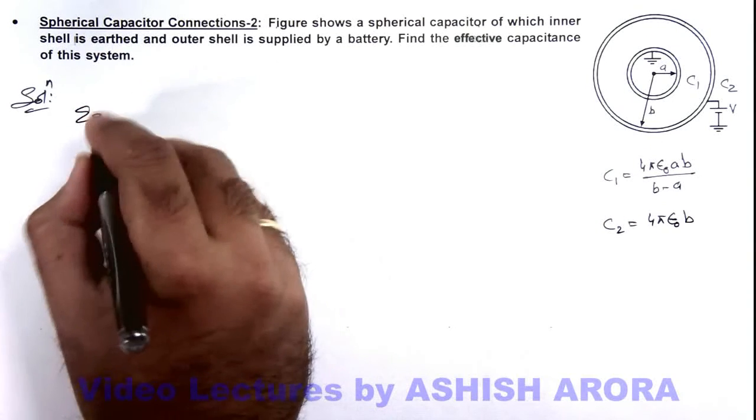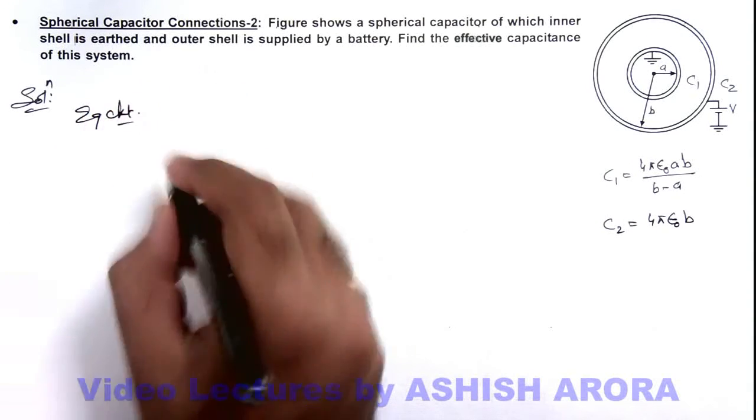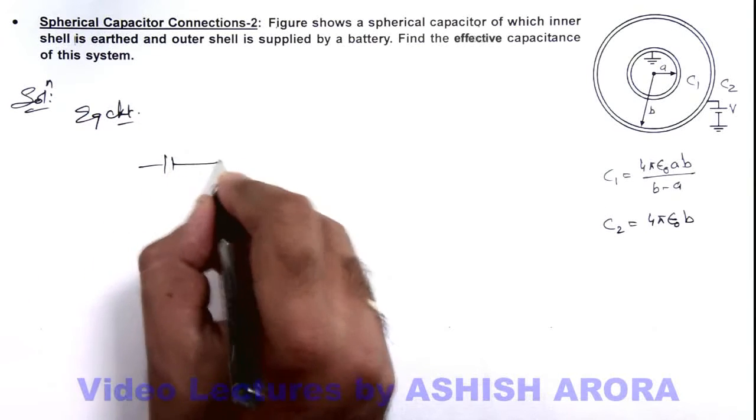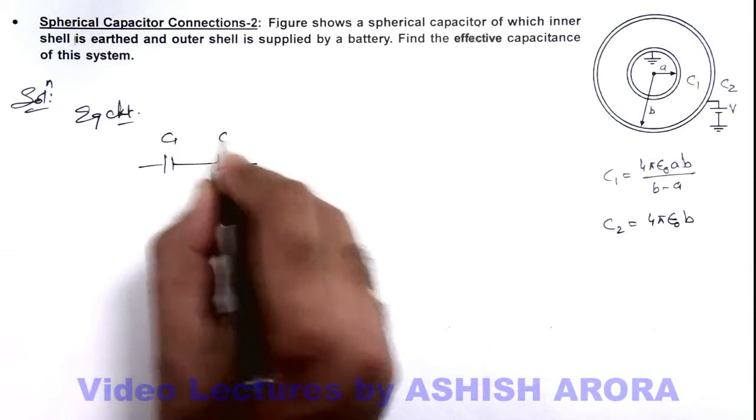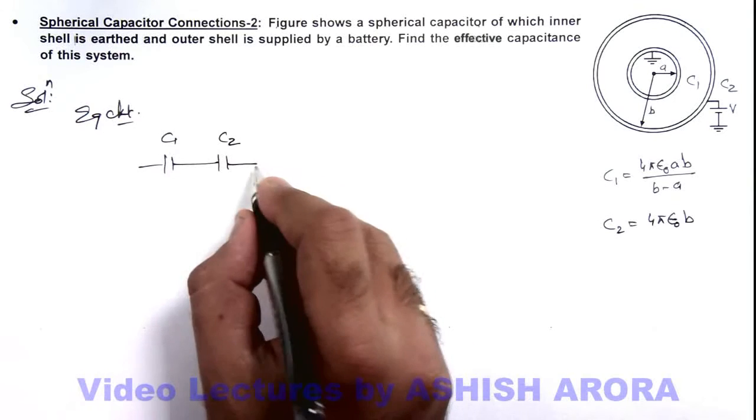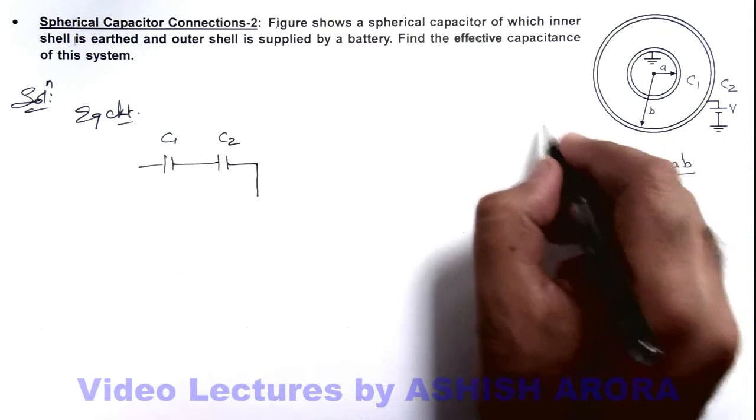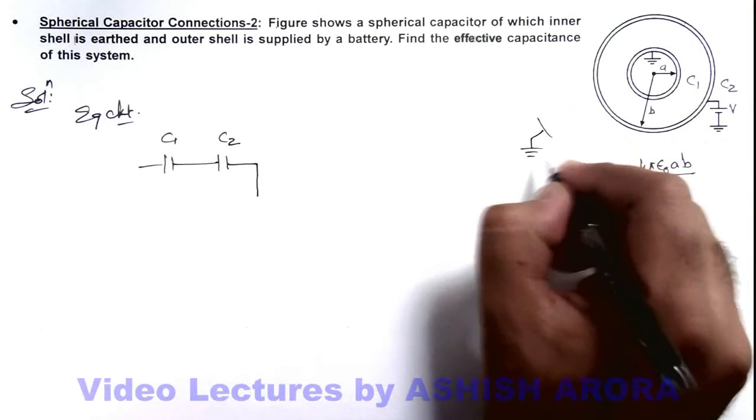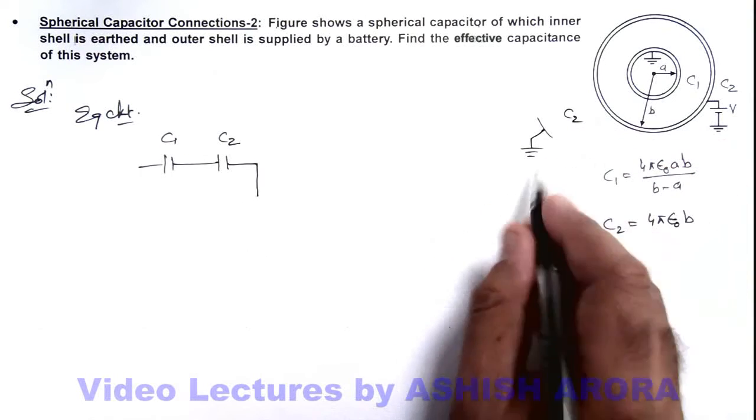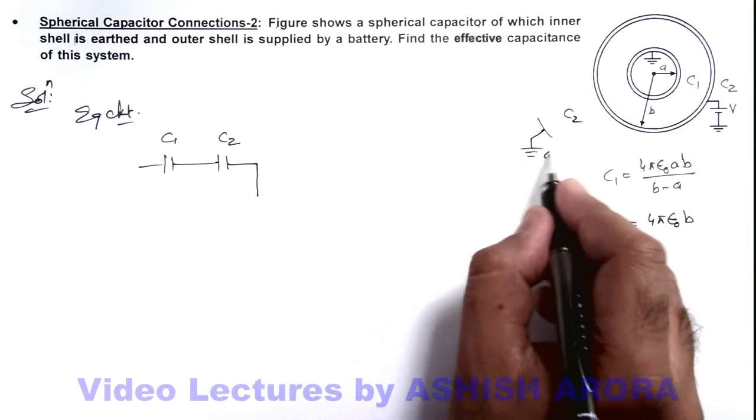Now if we draw its equivalent circuit, here we can see these two capacitors are connected one after another. Here we can see the outer plate of c2 which is at infinity, we assume it to be connected to earth, or it is always at zero potential.